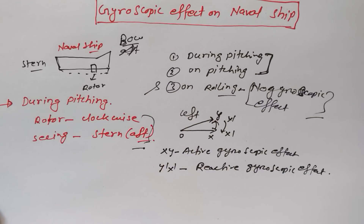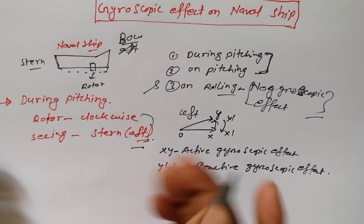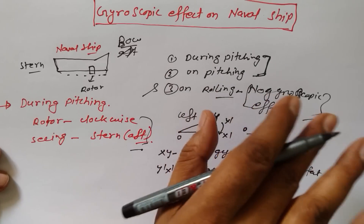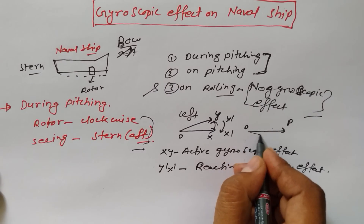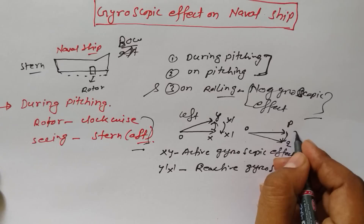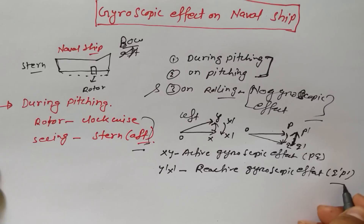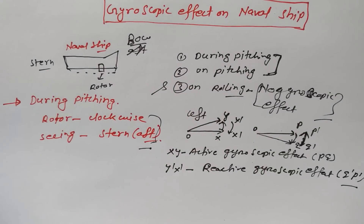If the naval ship is moving in this direction and it will take a right turn, suppose the momentum vector is OP. If it will take a right turn, its momentum vector becomes OQ. So the active gyroscopic effect would be PQ, and the reactive gyroscopic effect direction is Q-dash to P-dash - it starts from Q-dash and ends on P-dash. This happens because of Newton's third law.